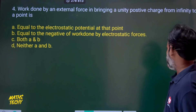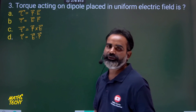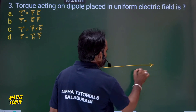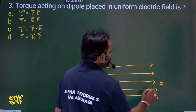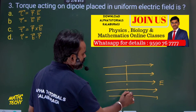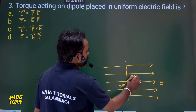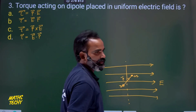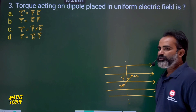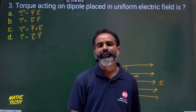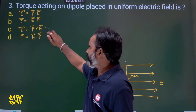Question 3: Torque acting on a dipole placed in a uniform electric field. Consider a dipole placed in the field. The dipole moment direction in physics is taken from negative to positive. The expression for torque is the cross product of dipole moment and electric field.